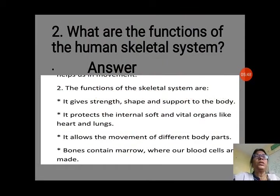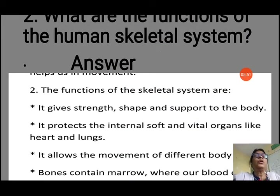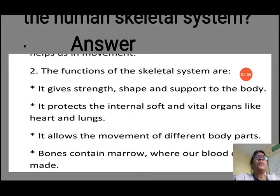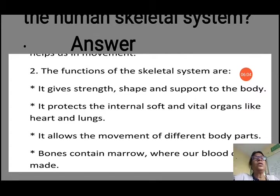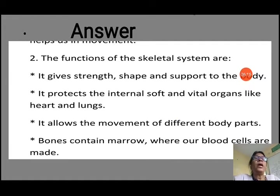Question 2: What are the functions of the human skeletal system? It gives strength, shape, and support to our body. It protects soft and vital organs like the heart and lungs; the brain is protected inside the skull. It allows movement of different body parts with the help of attached muscles. Bones also contain marrow where new blood cells are produced.